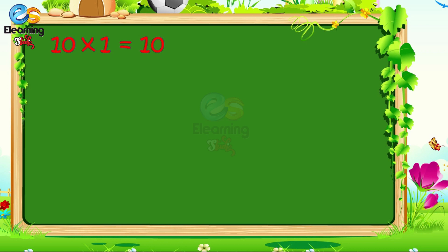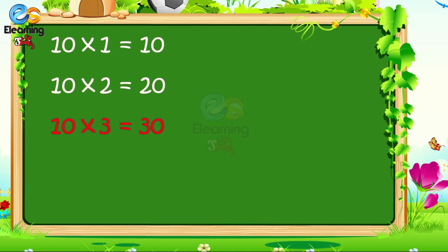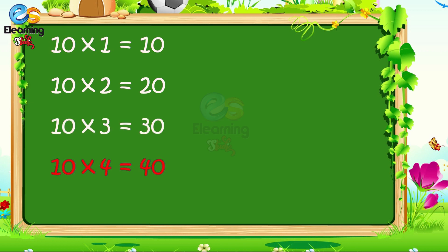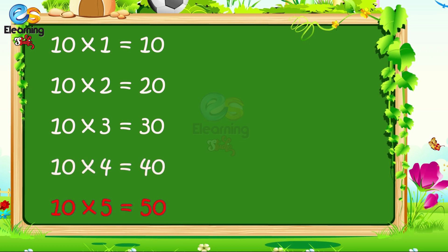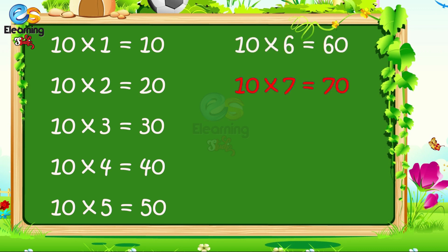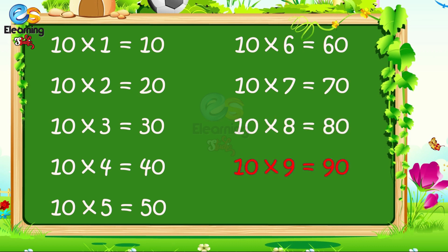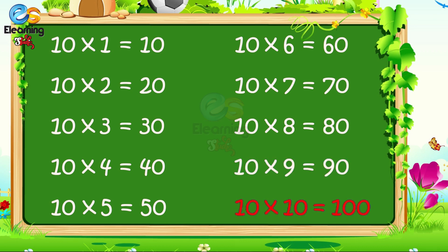10 1s are 10. 10 2s are 20. 10 3s are 30. 10 4s are 40. 10 5s are 50. 10 6s are 60. 10 7s are 70. 10 8s are 80. 10 9s are 90. 10 10s are 100.